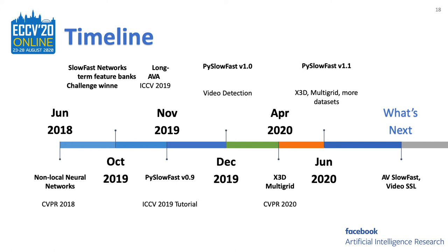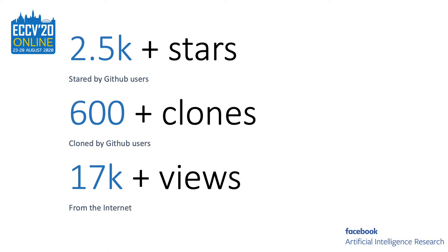Many people are also interested in our work on Audio-Visual SlowFast, an architecture for integrated audio-visual perception. We are working on open-sourcing it, along with more components for video self-supervised learning. Since the release of PySlowFast at the last ICCV, we have collected more than 2,500 GitHub stars, with more than 600 clones and 17,000 views from the internet.